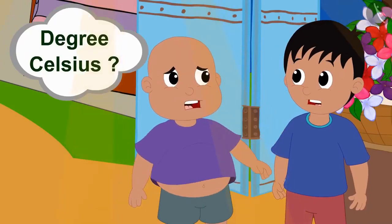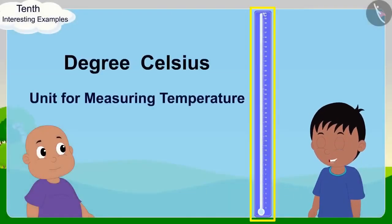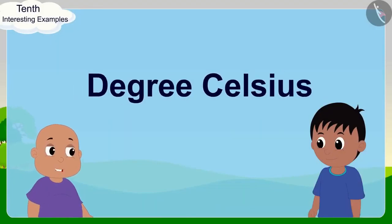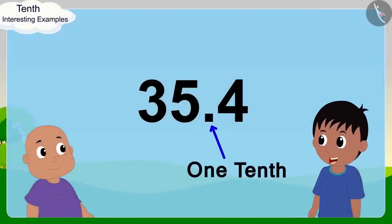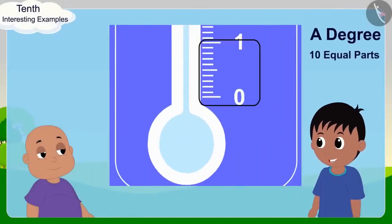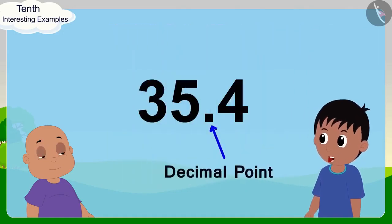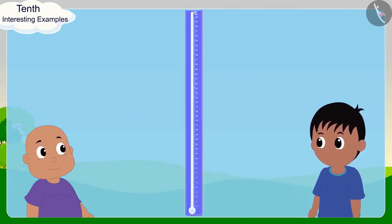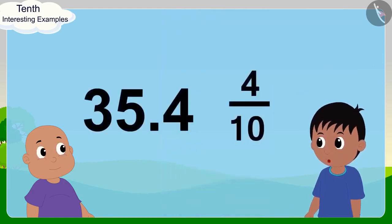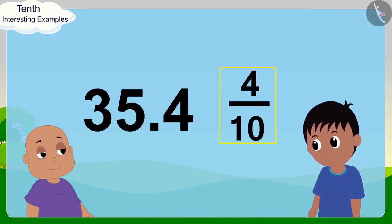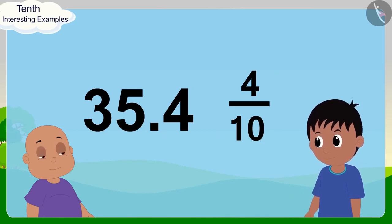Babalu understood degree Celsius but asks: 35.4 degrees — 35 is fine, but what is this 0.4? Raju explains: 1 tenth indicates that a degree is being divided into 10 equal parts. Because the number after the decimal point is 4, we are taking 4 out of the 10 parts of a degree. In this way, we can also write 0.4 as 4 tenths in the form of a fraction.